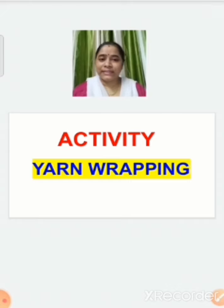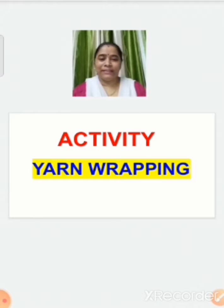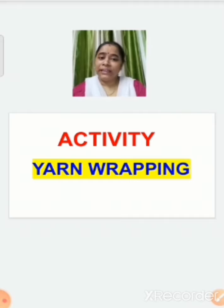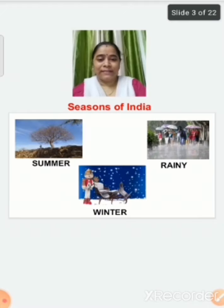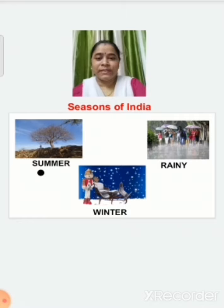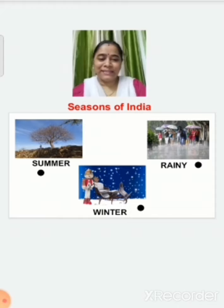Now children, what is a season? Seasons are different types of weather in a year. Children, you have already learnt that in India there are three seasons. They are summer season, rainy season, and winter season.